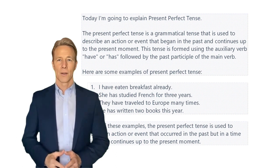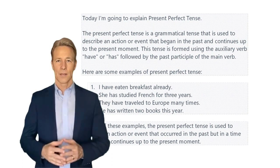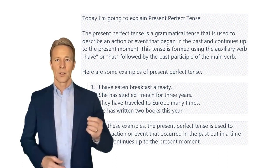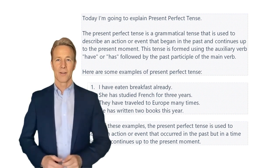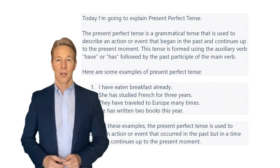In each of these examples, the present perfect tense is used to describe an action or event that began in the past and continues up to the present moment.